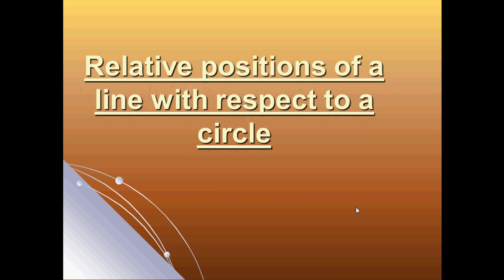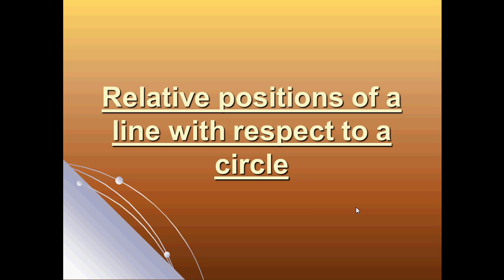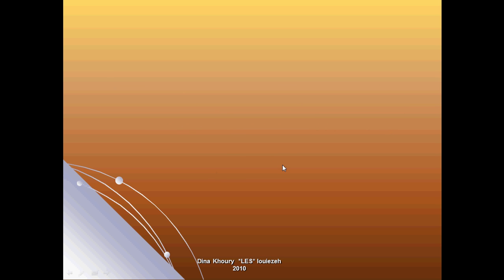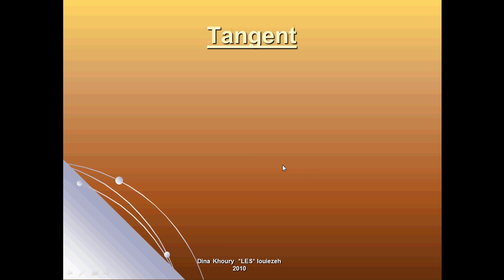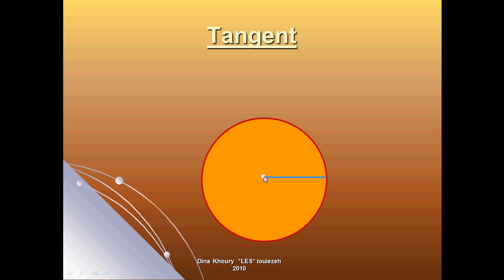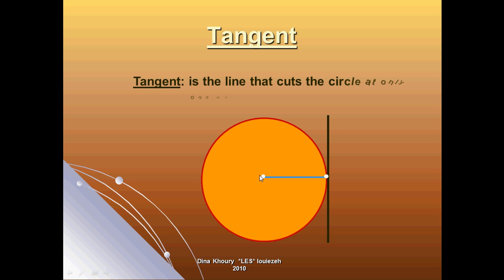I will be explaining the relative positions of a line with respect to a circle. We're going to start with the tangent line. When you consider a circle C with center O and a given radius, drawing a line perpendicular to this radius and intersecting the circle at only one point, we call this line the tangent line.